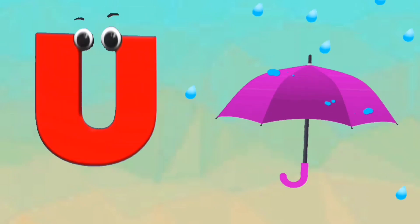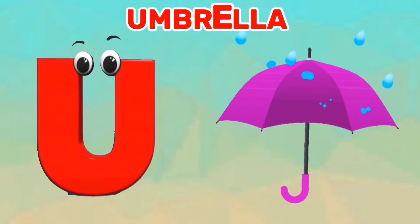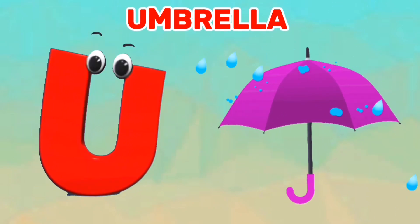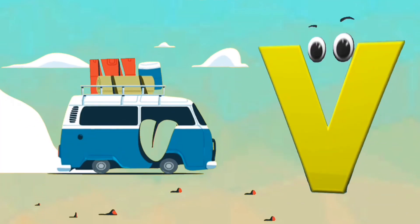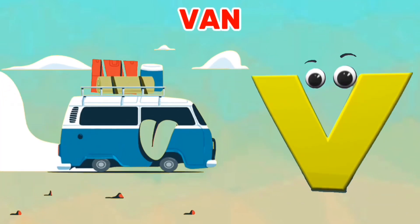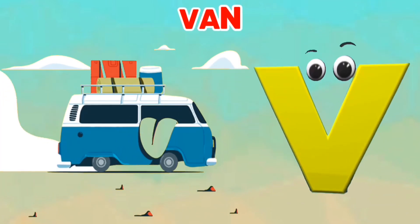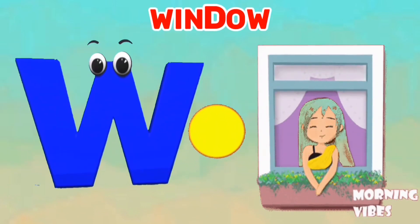U is for umbrella, u, u, umbrella. V is for van, v, v, van.